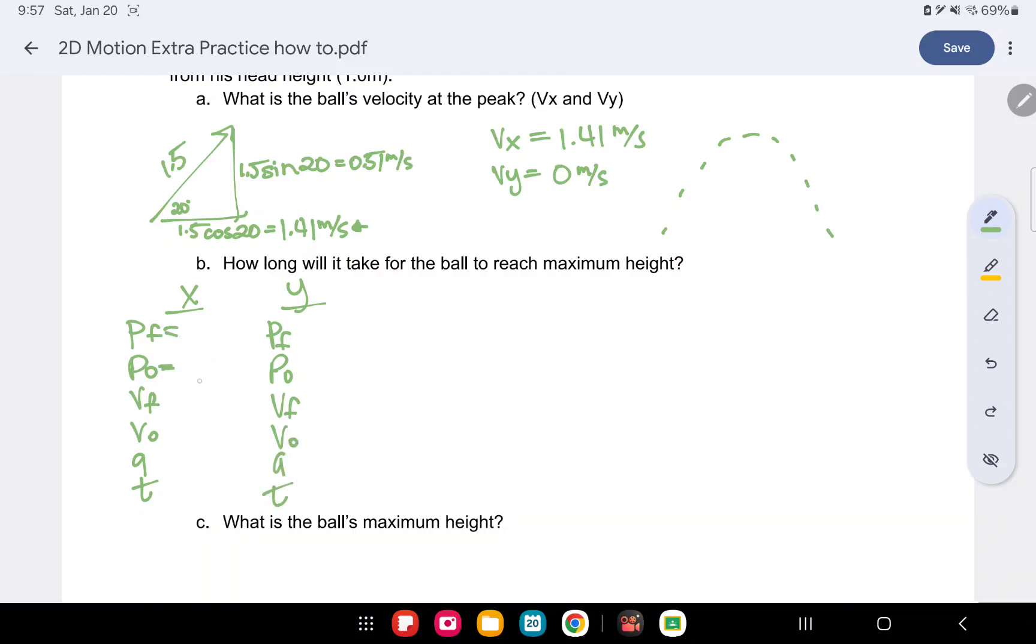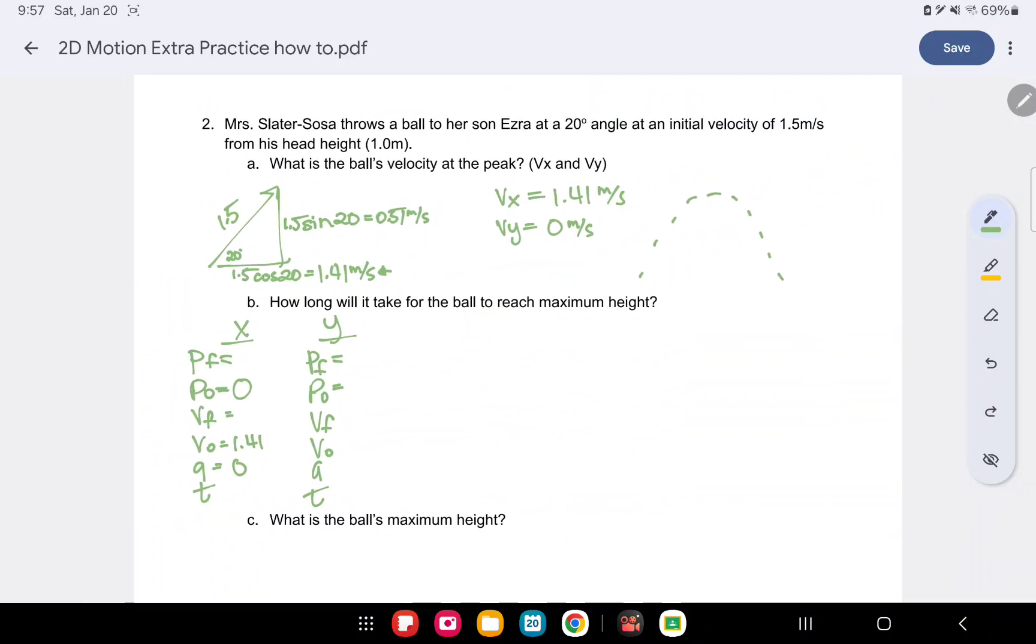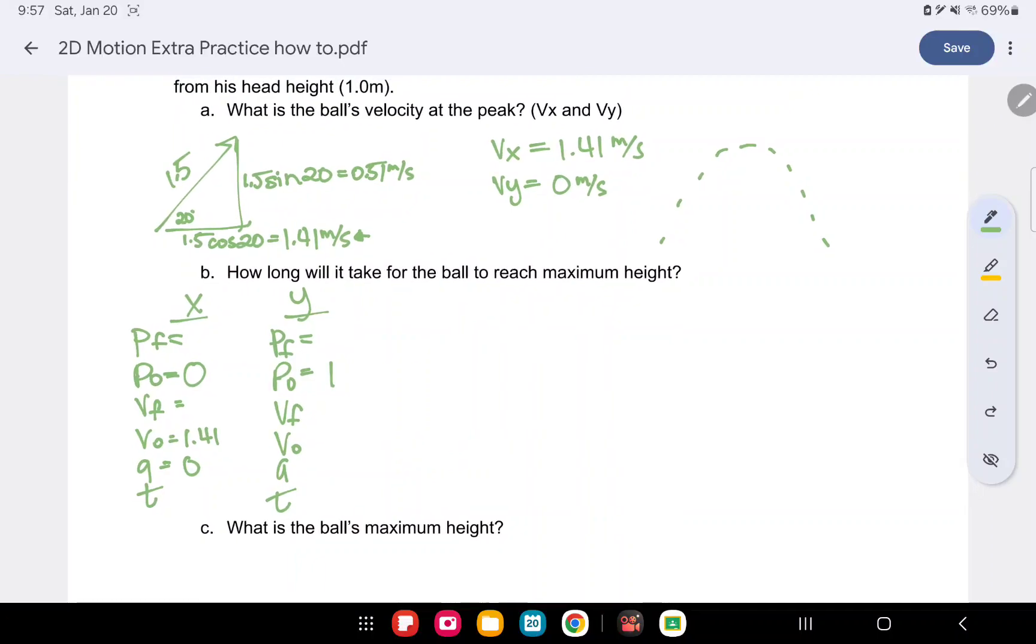We know our position initial is going to be 0 in our x direction. We know our velocity initial in our x direction is 1.41. We have no acceleration in our x. In our y direction, we are throwing it from his head height, which is 1 meter tall, or he is 1 meter tall, approximately. We don't know the VF. We know it starts with a 0.51 meters per second velocity. And we have gravity, 9.8 meters per second.